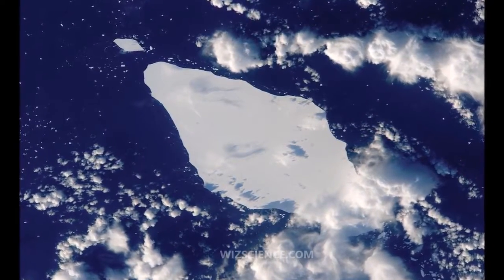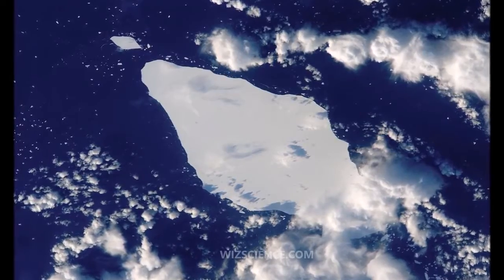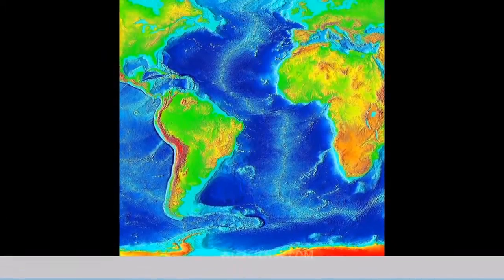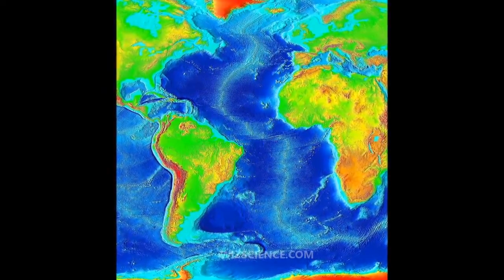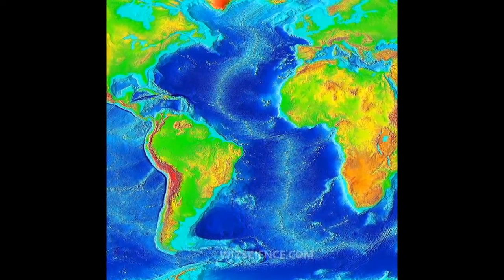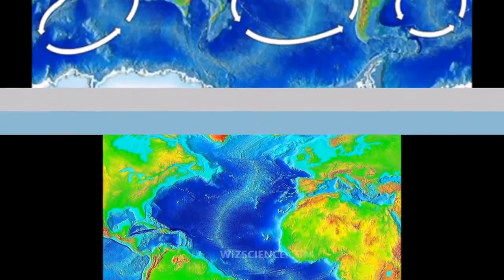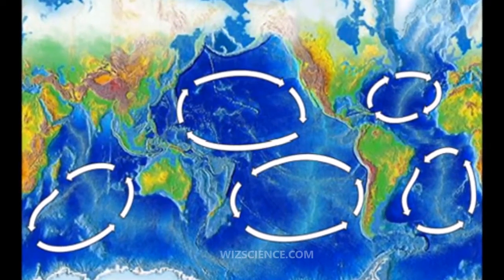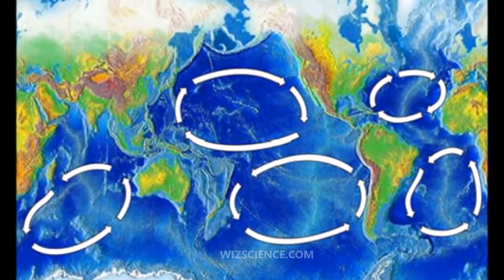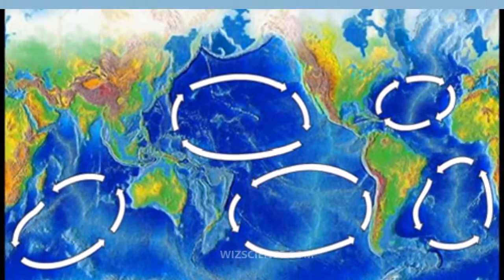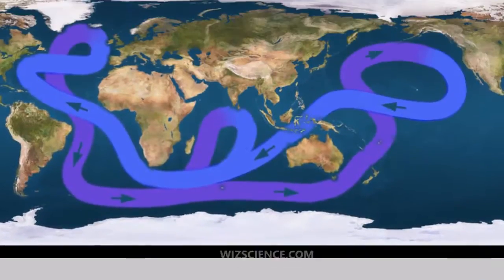The oldest known mention of 'Atlantic' is in the Histories of Herodotus, around 450 BC. The term 'Ethiopic Ocean', derived from Ethiopia, was applied to the southern Atlantic as late as the mid-19th century.